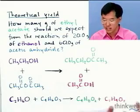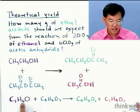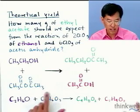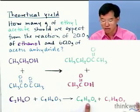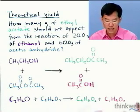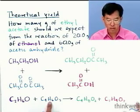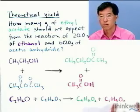Here's the balanced reaction expressed in molecular formula terminology. This is the ethanol, color-coded; this is the acetic anhydride going to ethyl acetate and acetic acid. It's one mole plus one mole goes to one mole plus one mole.